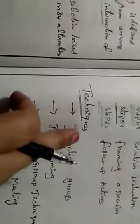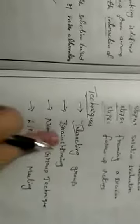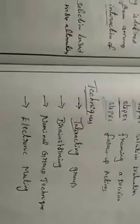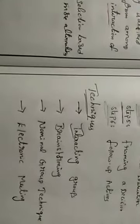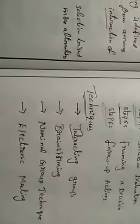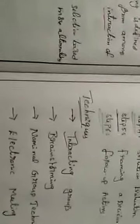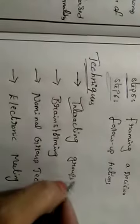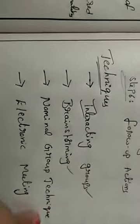Now let us discuss about the techniques in group decision making. Group decision making techniques are of four types. The first one is interacting groups, the second one is brainstorming, the third one is nominal group technique, and the fourth one is electronic meeting.